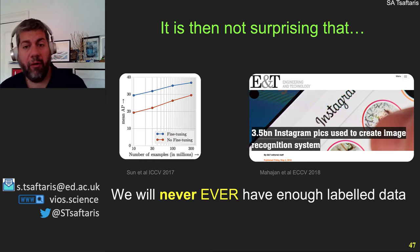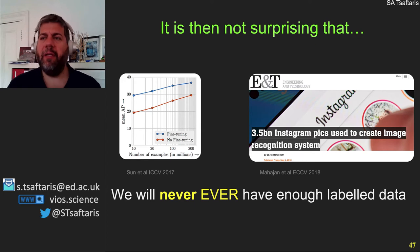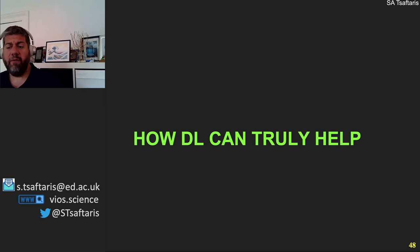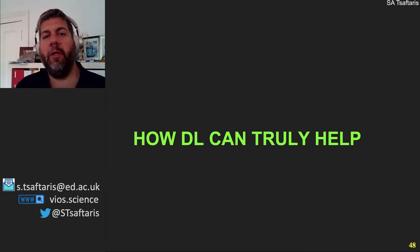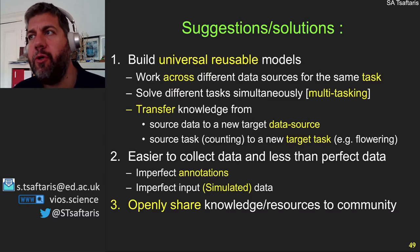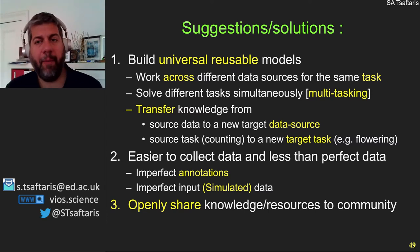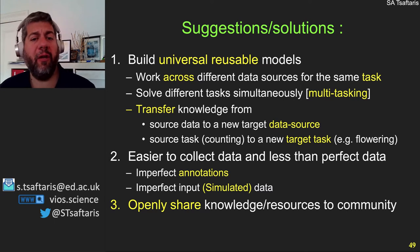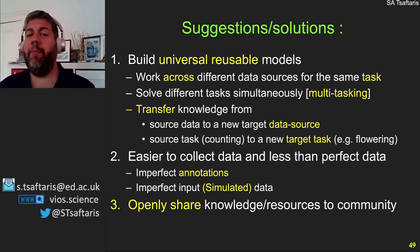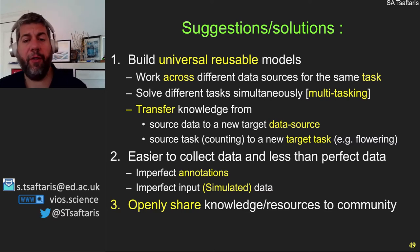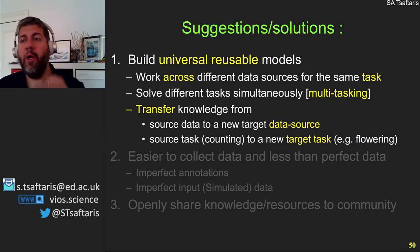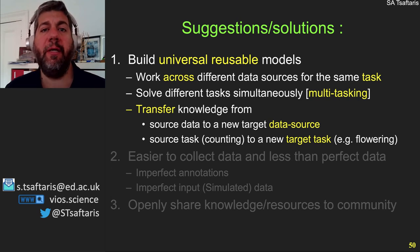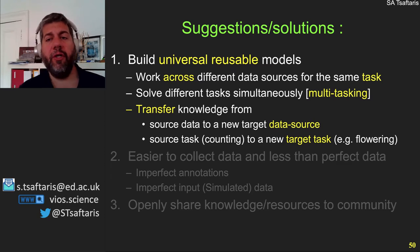I want to give you ideas on how we're building smart solutions. There are three suggestions that I think will power how we can move forward. One: don't try to solve one task — do more things at the same time and use knowledge across different domains. Two: make the process of collecting data easier and try to use less-than-perfect data. Three: openly share knowledge and resources with the community.